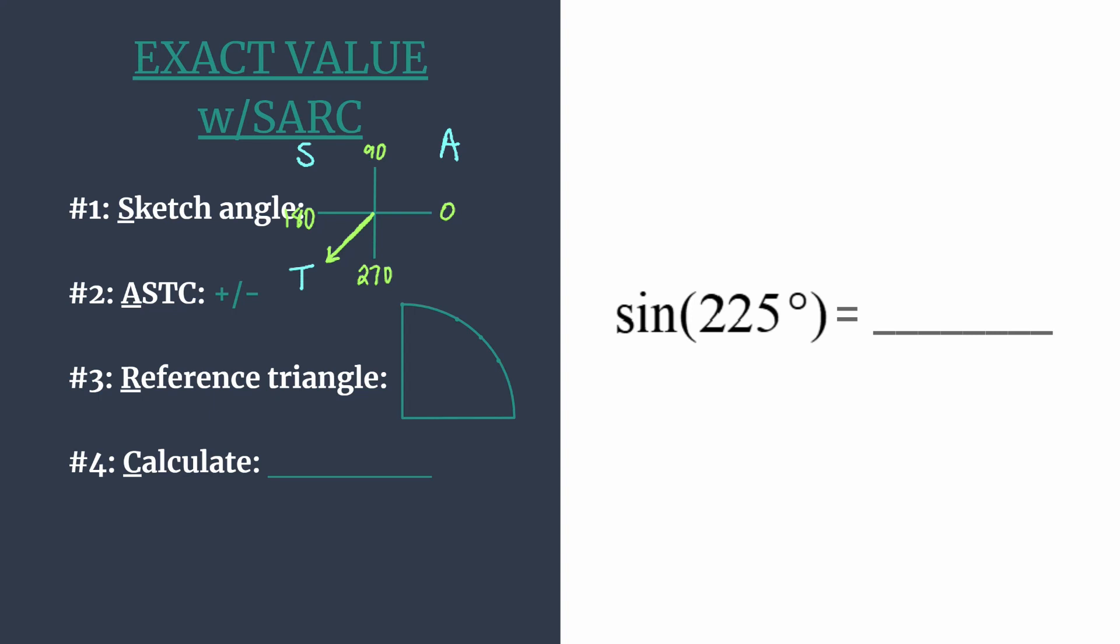Since we're trying to find the sine, we know that it's going to be negative since only tangent and cotangent are positive. So we can make a note of that. I like to put a negative sign where I'm going to put my final answer, just so I don't miss that. Of course, the C in ASTC stands for cosine and secant positive in the fourth quadrant.